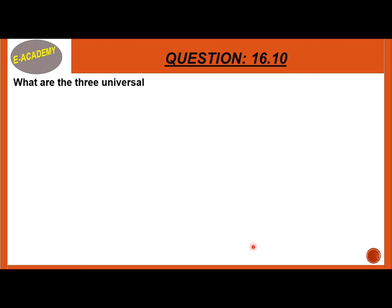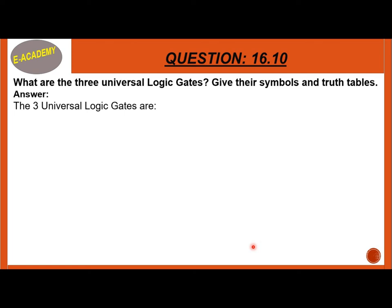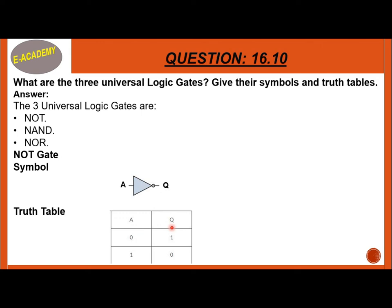Question 16.10: What are the three universal logic gates, their symbols, and truth tables? The NOT gate symbol is a triangle with a circle attached. A is the input and Q is the output. If A is 0, then Q is 1 — the output is the inverse. If A is 1, then Q is 0. Here 0 means off and 1 means on.